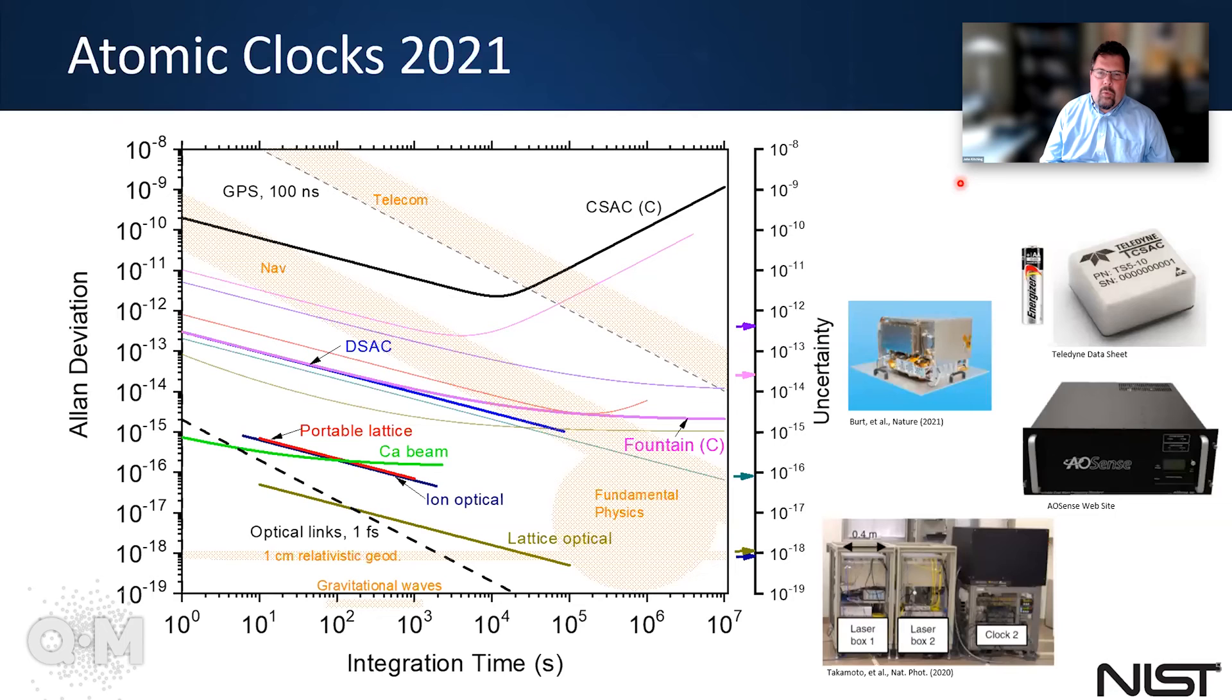Over the last 20 years, there's been a number of developments that have emerged and are now really allowing more capability. We now have chip scale clocks that can basically run on a battery. Of course, they're not as stable as other things, but because they can run on a battery, they're important for a lot of applications.